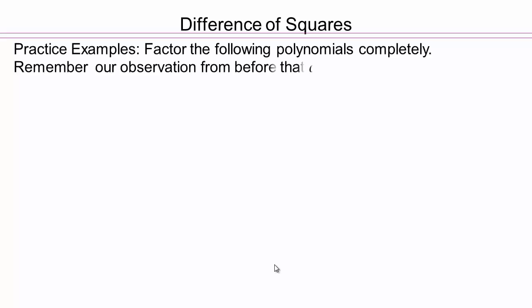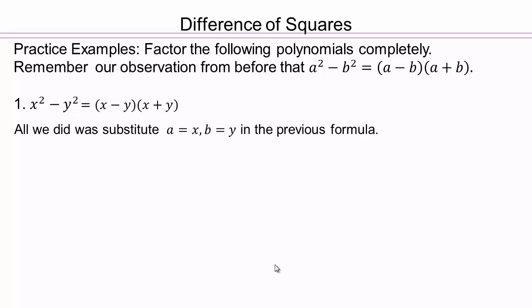Let's do some examples using that formula. Remember, the first step in any factoring is to pull out the greatest common factor, then use other techniques. So x squared minus y squared is going to factor as x minus y times x plus y. What we're really doing is substituting a to be x and b to be y. That's how substitution works.